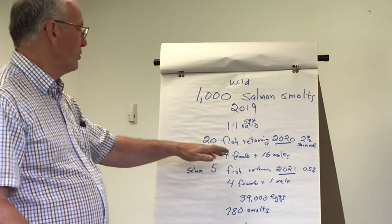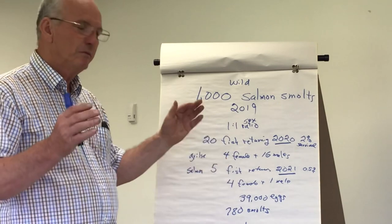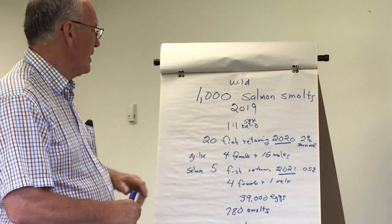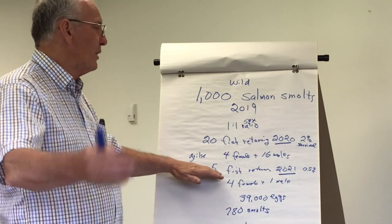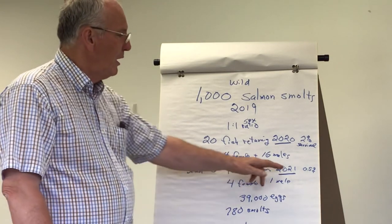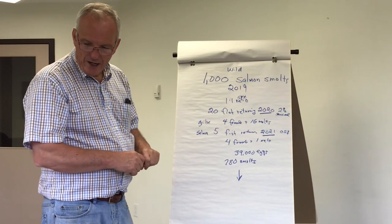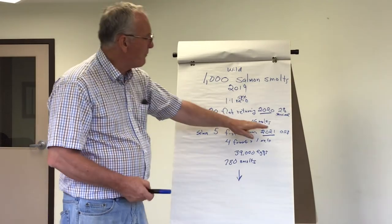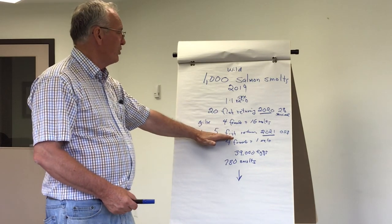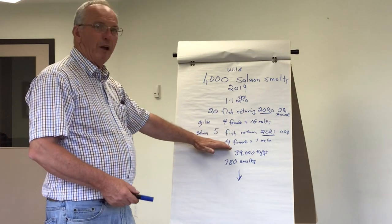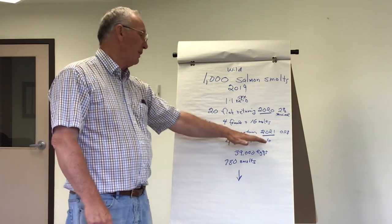Grills are mostly males, so you would have about four female grills and 16 male grills coming back from that. The rest would stay out another year and come back in 2021, but there's a very low survival on those, only about a half a percent. So that would only bring back five fish as salmon, but the female ratio is higher. You'd have four female salmon and one male.